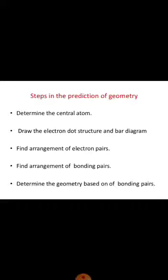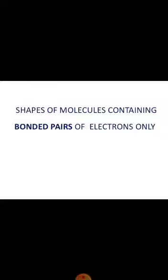What are the steps in the prediction of geometry? First of all, you determine which is the central atom. Then, you draw the electron dot structure. Then, find the arrangement of electron pairs. Then, find the arrangement of bonding pairs, and then determine the geometry on the basis of bonding pairs. Now let's see the shapes of molecules containing bonded pairs of electrons only — these are molecules where all electron pairs are bonded and there is no lone pair.